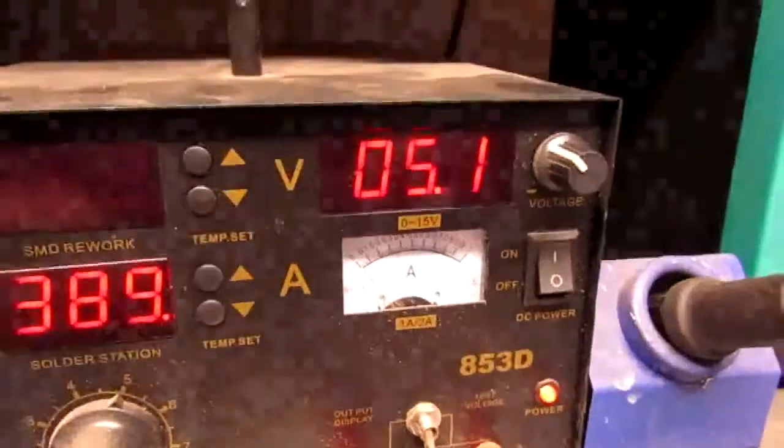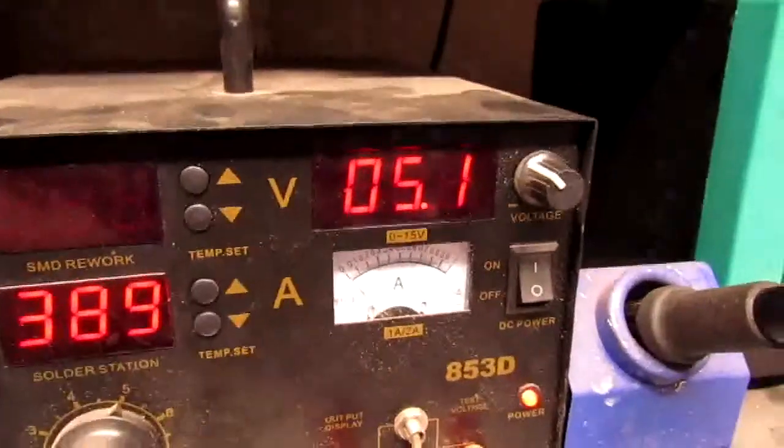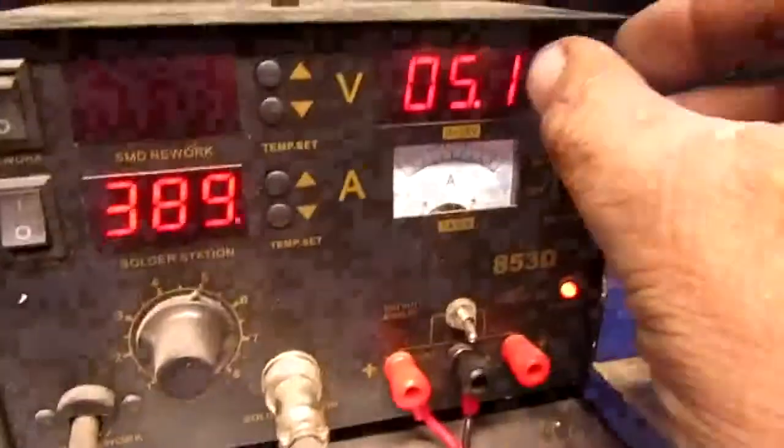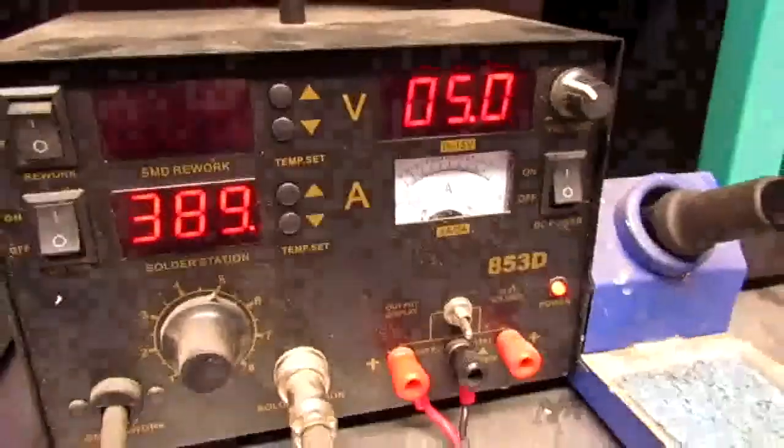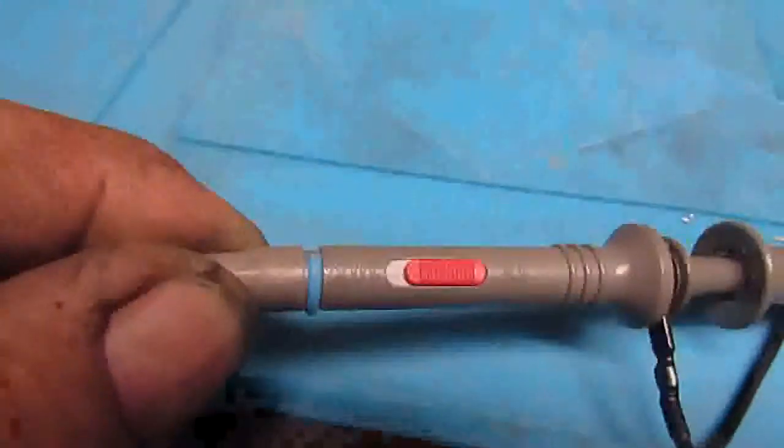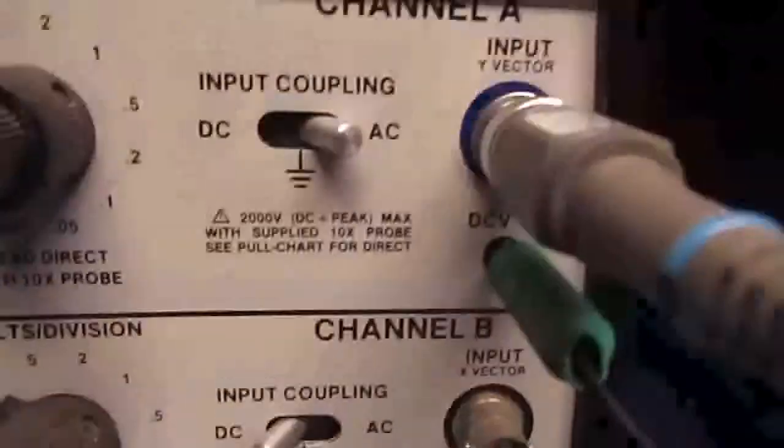So we have the DC bench supply dialed in at 5.1 volts. Let's see if we can get it down to 1.5 volts. Connect it to the probe. We want this on the one-time setting, since we already put a 9 meg inside the BNC connector.